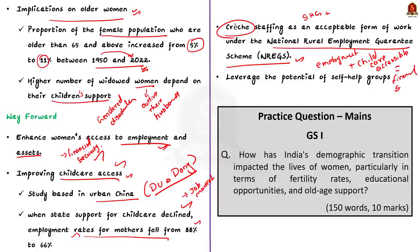To summarize this discussion: we started with demographic transition theory, then saw the evolution of India's population, how it affected women in India, and finally some steps suggested by the author to address the issues faced by women. With this, let us conclude and move to the next news article.